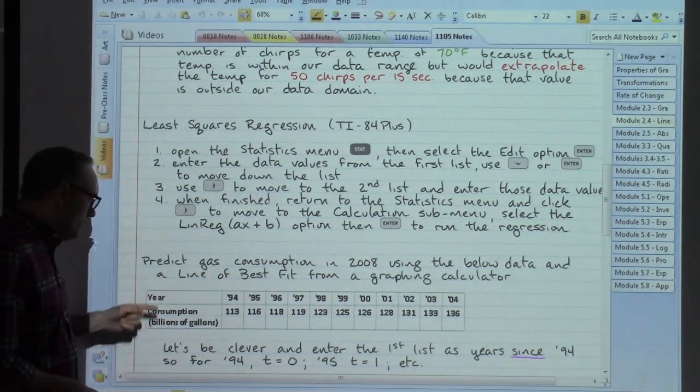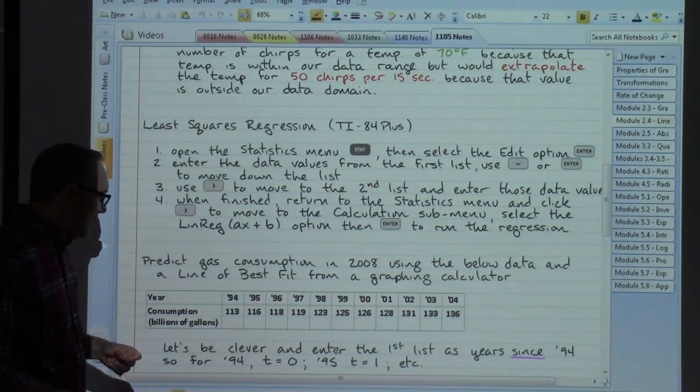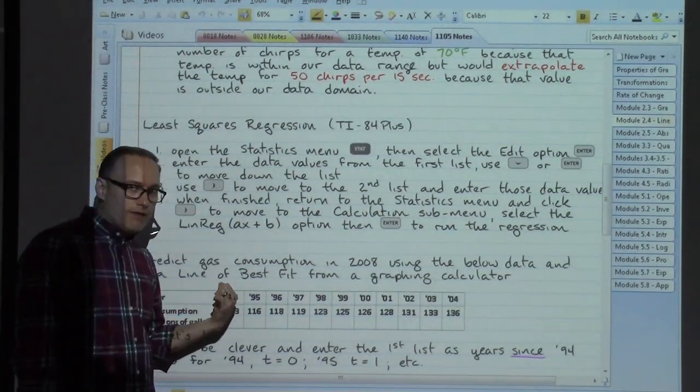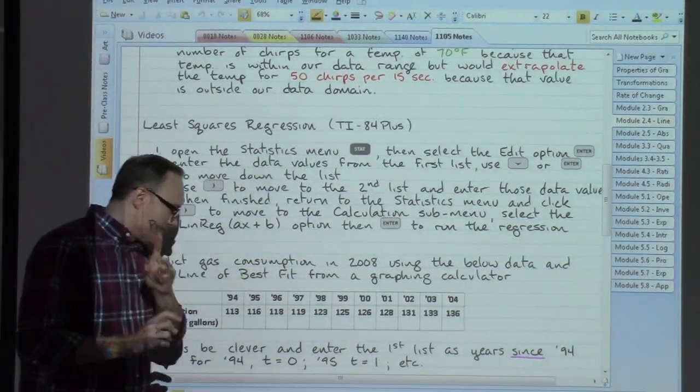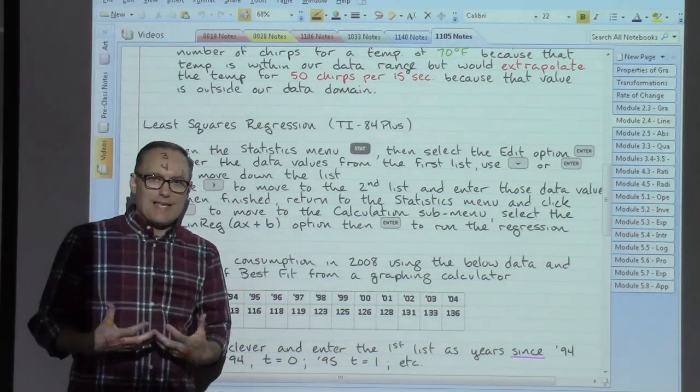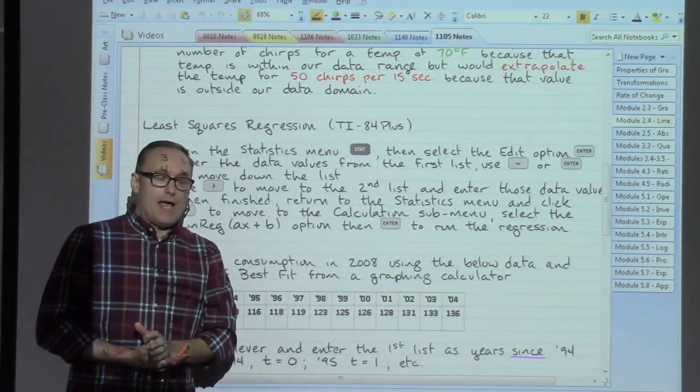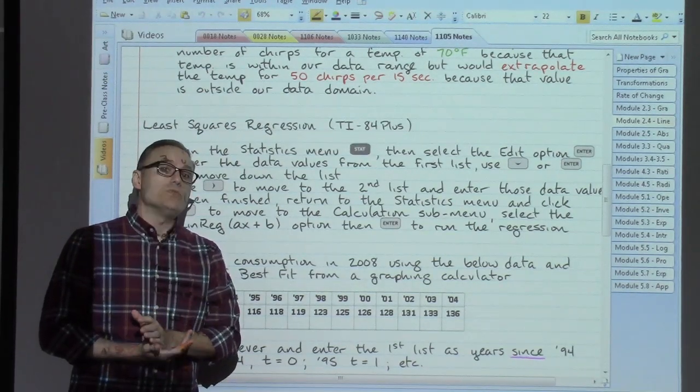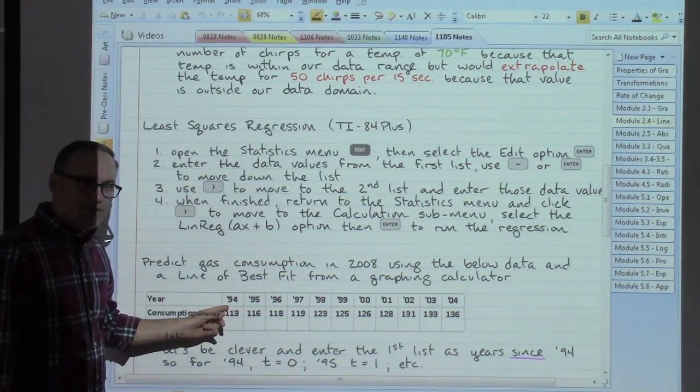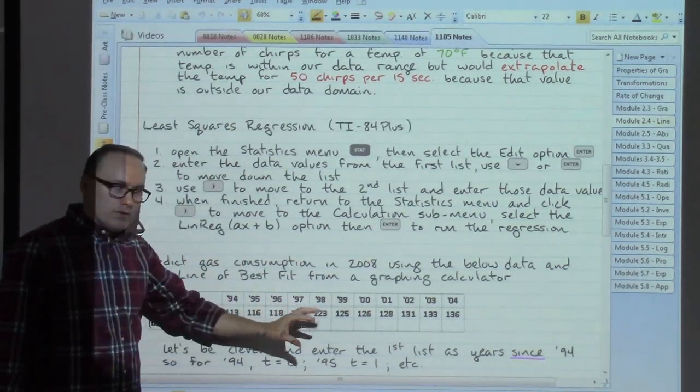For the year, we have the consumption based on billions of gallons of gasoline. And rather than inputting the year 94 or 95 or even 1994 or 1995, let's be smart. Let's be a little bit clever even. And let's say for the first year that we've got, let's call this t equals zero. Sort of like that science idea of whenever we start counting something based on time, the first count that we're going to do is based on t equals zero, that initial measurement. So t equals zero is going to correspond to the year 1994, t equals one would correspond to 1995, and so on. We're going to want to enter this information.